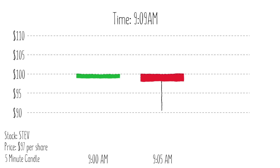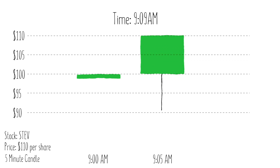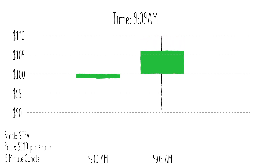Now this next example is unrealistic for such a short timeframe, but if at 9:09 Stev actually rose to $110, the candle would actually flip from red to green. The open is still the same because at 9:05 Stev opened at $100, but now it's reversed and it's green. Right before 9:10 strikes, Stev is at $105.